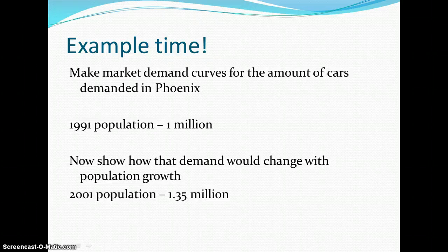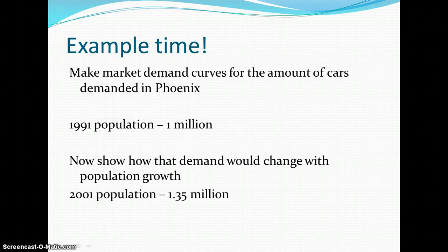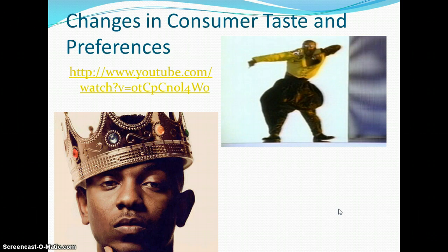Now I want you to make a market demand curve — one demand curve — for the amount of cars demanded in Phoenix. Phoenix's population in 1991 was 1 million. However, their 2001 population was 1.35 million. So from 1 million to 1.35 million.